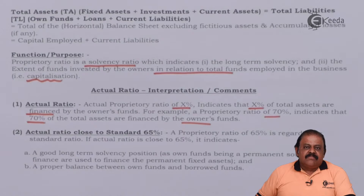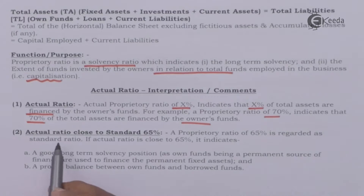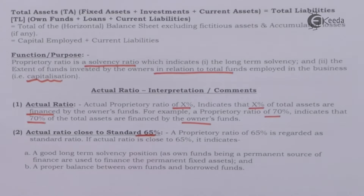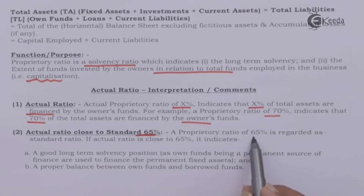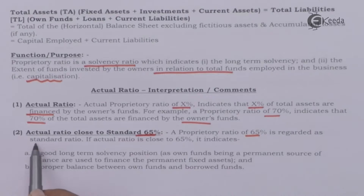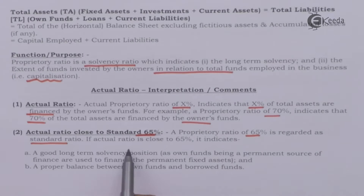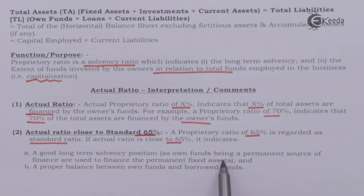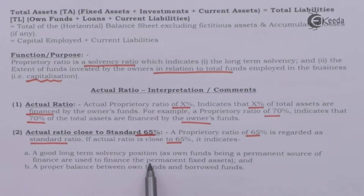The balance 30 percent of the assets are backed by borrowed fund. A proprietary ratio of 65 percent is regarded as the standard ratio. If the actual ratio is close to 65 percent, it indicates a good long-term solvency position, as own funds — being a permanent source of finance — are used to finance the permanent fixed assets of the business like land, building, premises, machinery, and furniture.